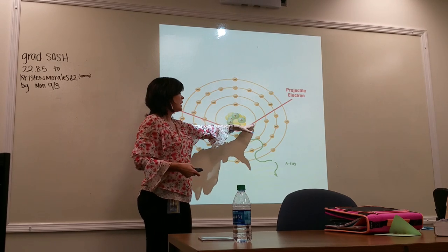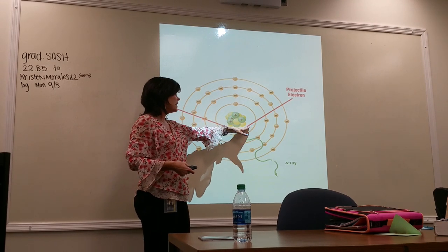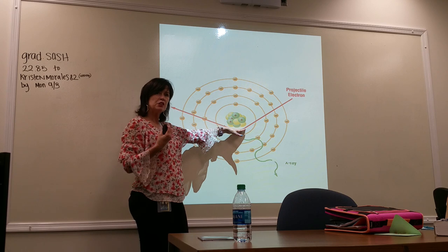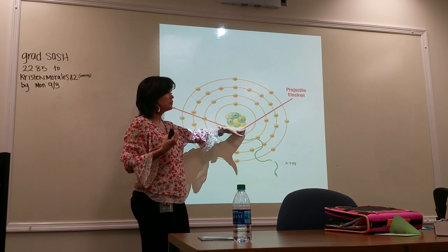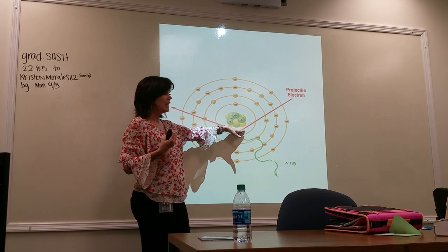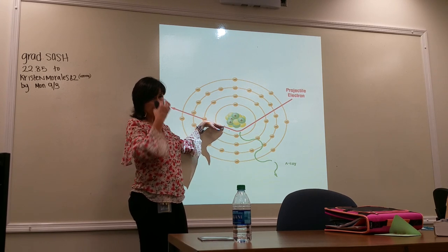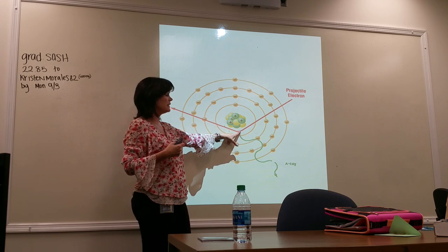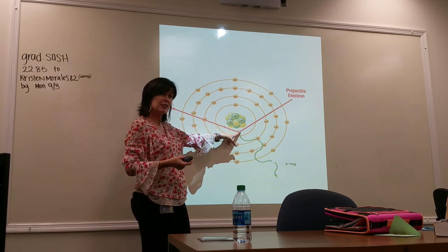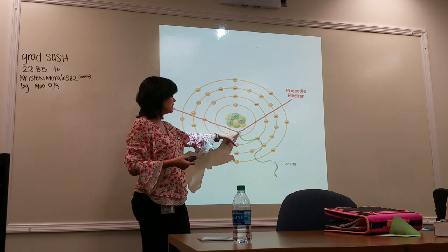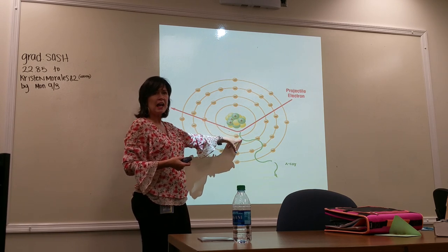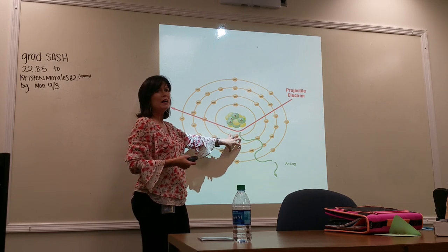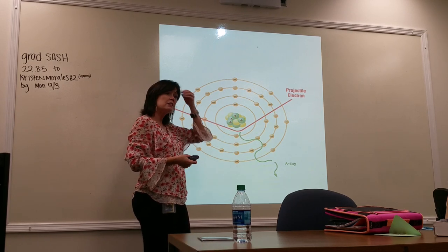When an electron is attracted to the positive nucleus, it slows down. At the point of deceleration, it produces an x-ray photon. What interaction is this?